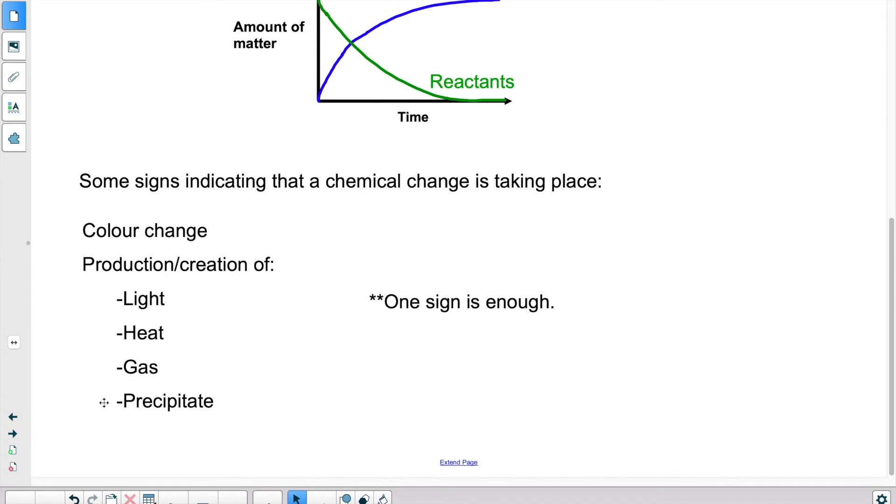Production of a precipitate would be normally when you have two solutions mixed together and a solid gets created by the collision between the particles of each solution. When they collide together, a solid gets formed and it goes to the bottom of the container, and that's what we call a precipitate. So again, you only need one of these. So one of these four or this one. So there's five in total. You only need to observe one of them in order to determine that a reaction is chemical.